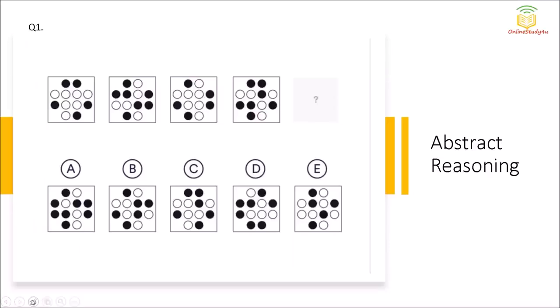Hello everyone, welcome to Online Study For You, one step solution for all your placement needs. Goldman Sachs has abstract reasoning as one of the subjects in their assessment. Most of us are not aware of what exactly abstract reasoning is, so I am going to take you through a few questions so that you understand what we have to do and do not make mistakes in the examination.